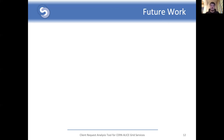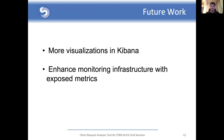Some future work that can improve this project includes adding additional visualizations in Kibana alongside exposing more information in the JALIEN events. One example would be a heat map of user activity based on the IPs of the requests. The current monitoring infrastructure could be improved by periodically querying Elasticsearch and extracting indexed and analyzed information. Also, migrating the current setup to a new Elasticsearch cluster deployed by CERN's IT department, where more nodes with more processing power would be available, with some performance testing done on the new cluster.